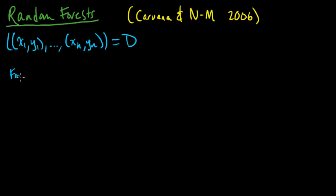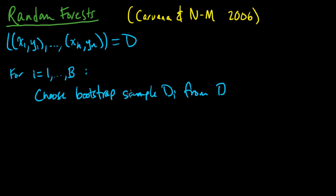The algorithm is: for i goes from 1 to B, for some number B, we're going to construct B trees. For each tree, we choose a bootstrap subsample from D, call it Di from D, and this is just like what we talked about with bagging - you sample endpoints with replacement uniformly from this set.